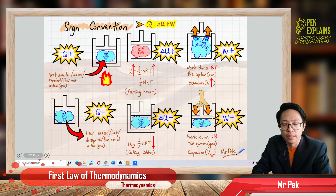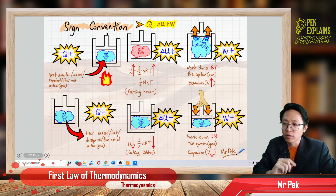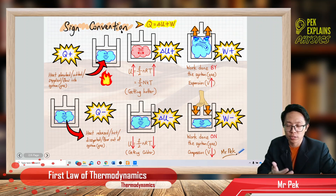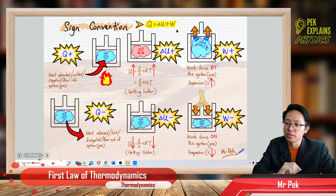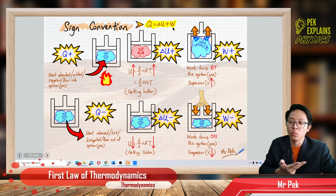Now the second part of thermodynamics. We need to know about the sign convention for the first law of thermodynamics equation: Q equals delta U plus W. The sign convention — positive and negative — is very important for these three symbols: Q, the heat; delta U, the change in internal energy; and W, the work done.